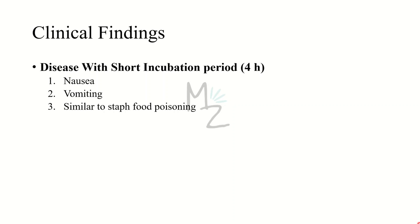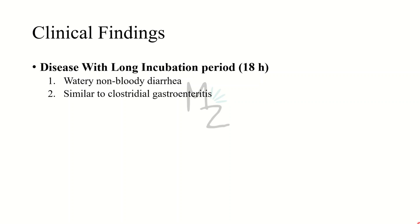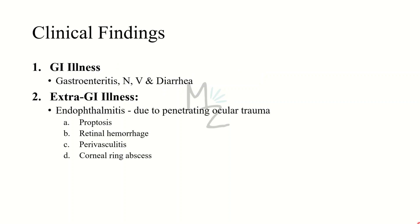Clinical findings: diseases with a short incubation period of around four hours present with nausea and vomiting, similar to food poisoning caused by Staphylococcus. Diseases with a longer incubation period of 15 to 18 hours present with watery non-bloody diarrhea, similar to clostridial gastroenteritis. There are two categories: GI diseases (gastroenteritis, nausea, vomiting, diarrhea) and extra-GI diseases. The most common extra-GI disease is endophthalmitis due to penetrating ocular trauma, with symptoms including proptosis, retinal hemorrhage, perivasculitis, and corneal ring abscess.